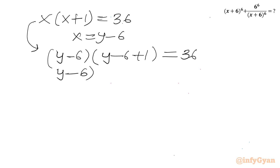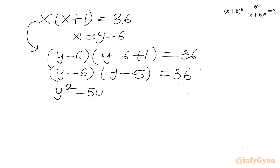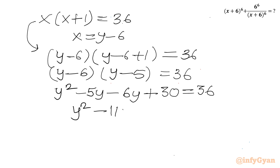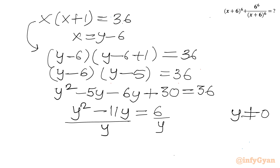So (y minus 6)(y minus 5) equal to 36. Expanding: y² minus 5y minus 6y plus 30 equal to 36, or y² minus 11y equal to 6. Since y cannot be equal to 0, I can divide both sides by y. This gives us y minus 11 equal to 6 over y, and rearranging: y minus 6 over y equal to 11.